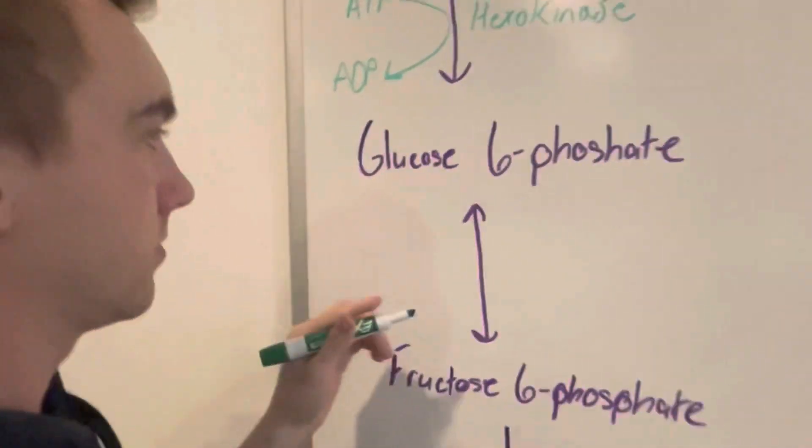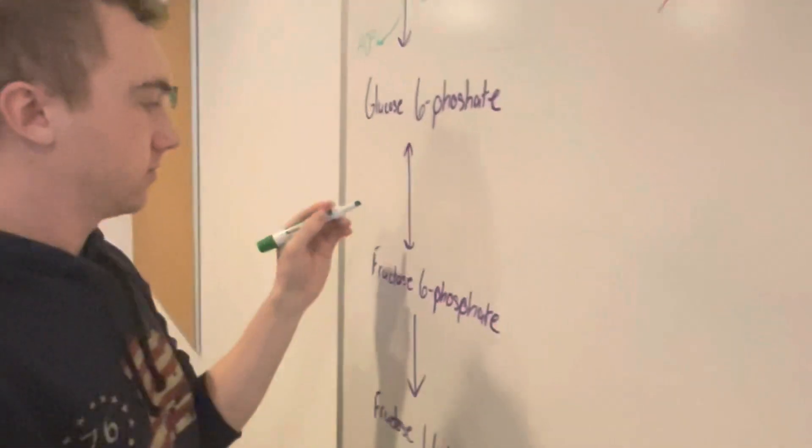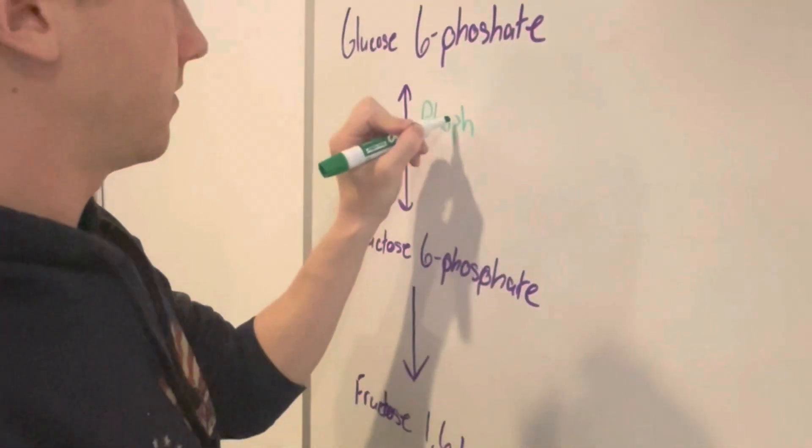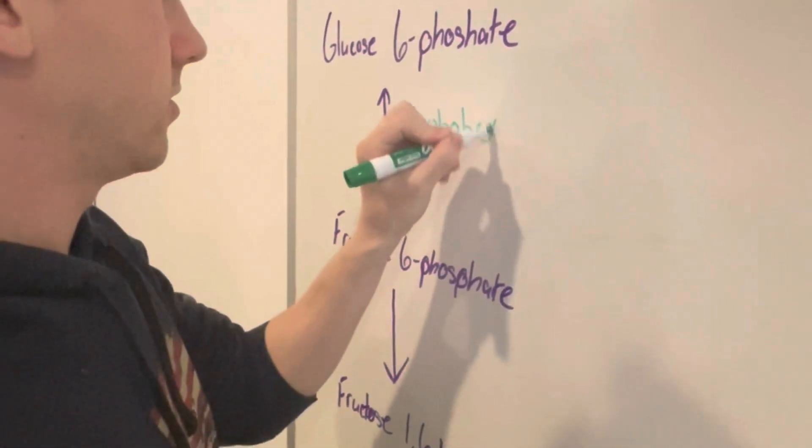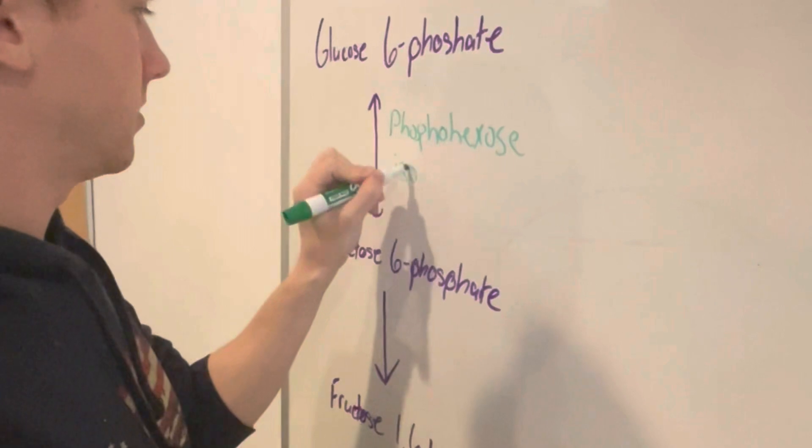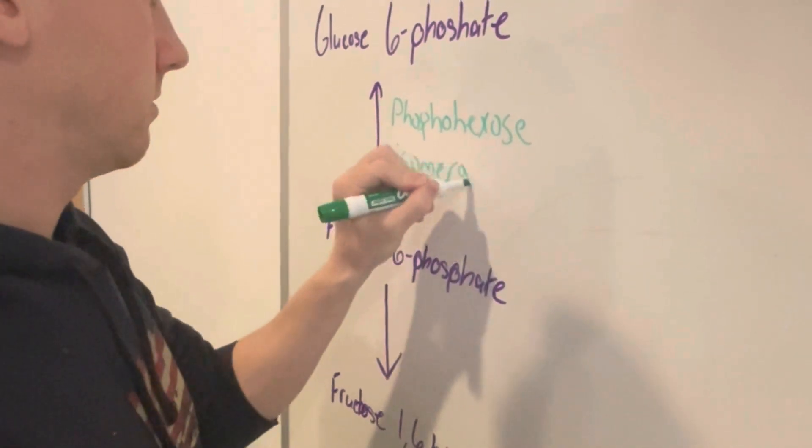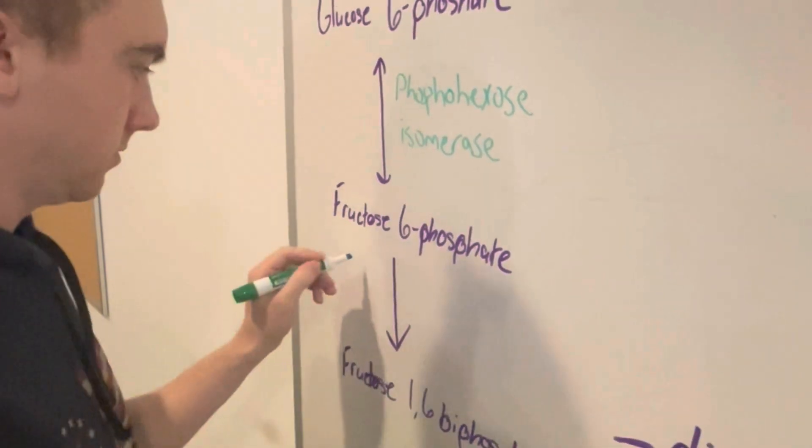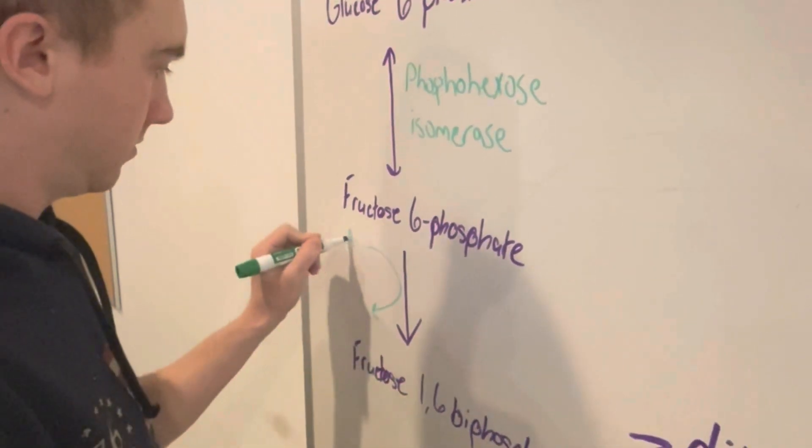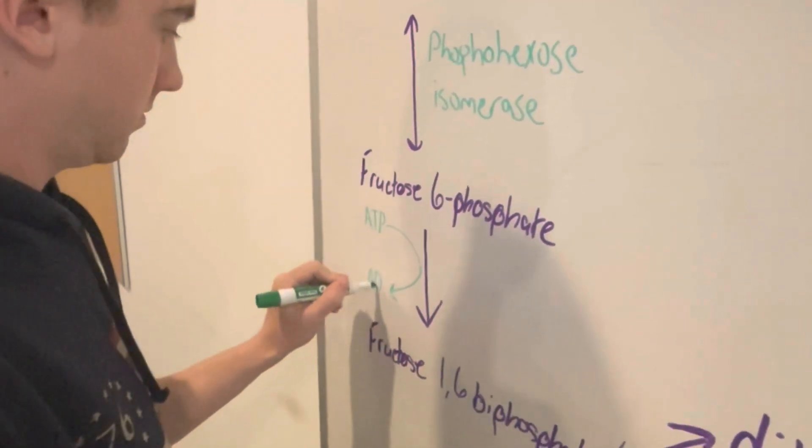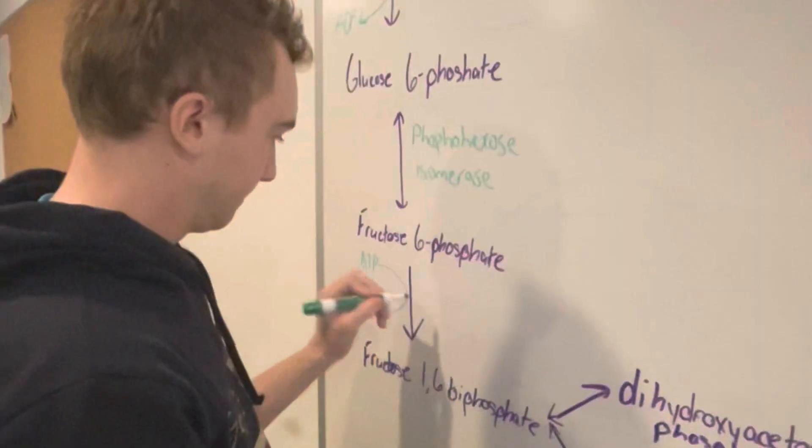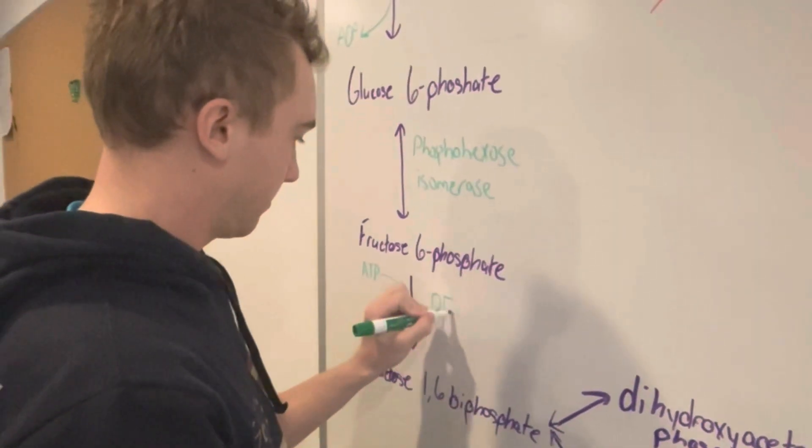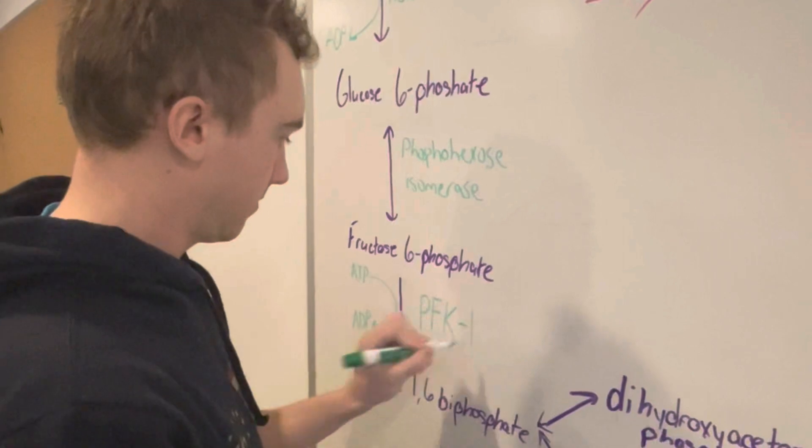The next enzyme used between glucose-6-phosphate and fructose-6-phosphate is phosphohexose isomerase. ATP has been transferred into ADP, and this reaction is catalyzed by the enzyme phosphofructokinase-1. We're going to denote that by PFK1.